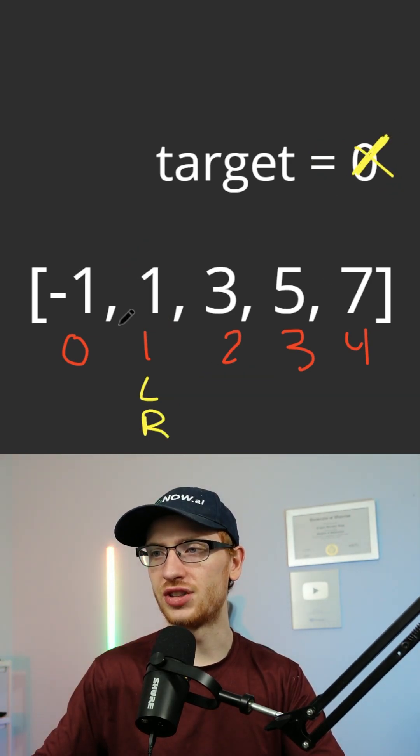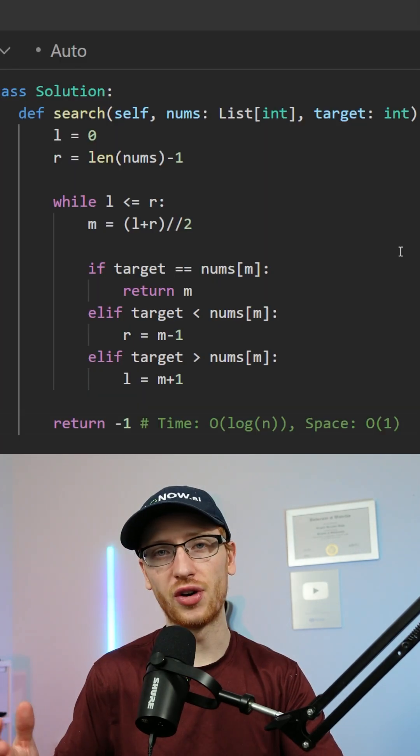Now in the alternate scenario when that target's not even in the array, we'd actually get l and r are going to crisscross and usually return negative 1. Follow me for more.